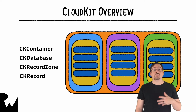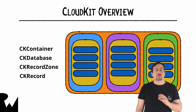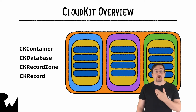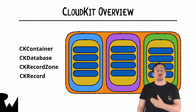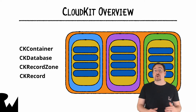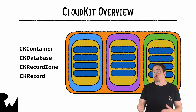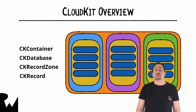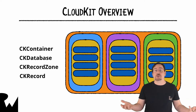Essentially, you get your database from the container. From the database you query and save to specific zones. Data is organized by record, so you can either save records or read from them in the database. These records are modeled from record types — and that's the framework.